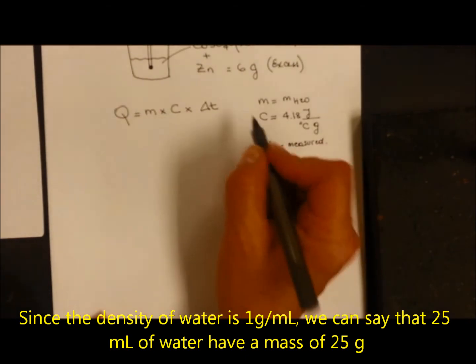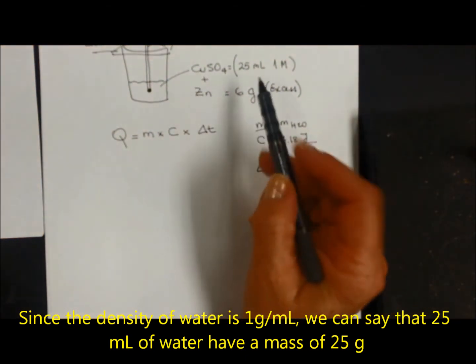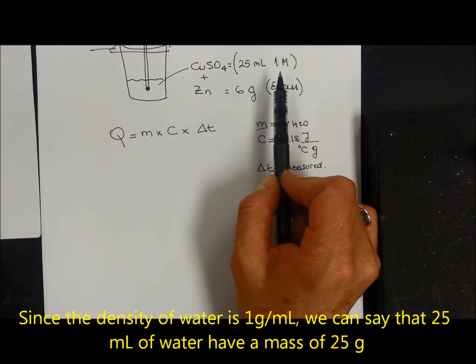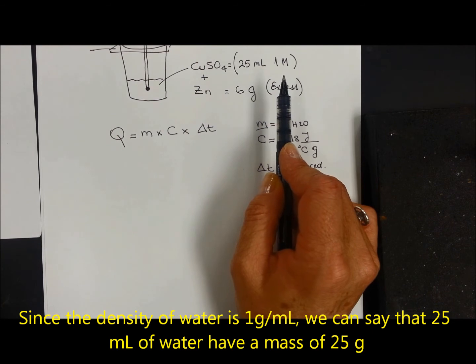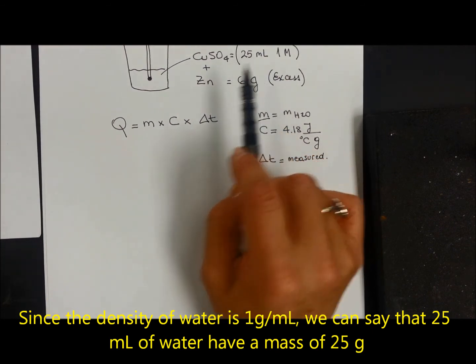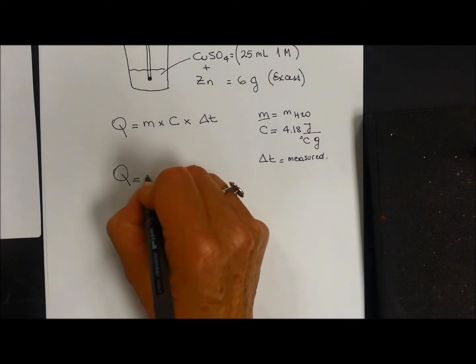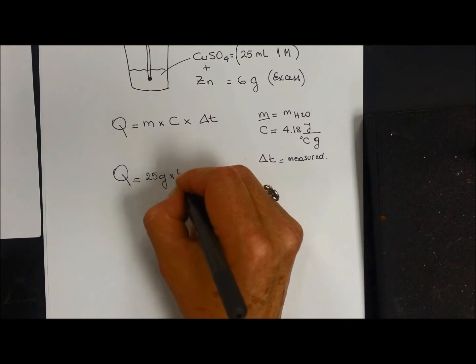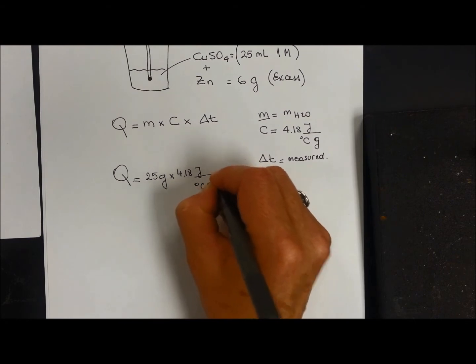We can say that the mass of water is going to be the mass containing the solution. For this particular example, we are going to take the volume of the solution to have an approximately one gram per milliliter density, so we are going to get the mass of the water as the same as the volume. So the Q is equal to the mass of the water, which is going to be 25 grams, times C, which is 4.18 joules over Celsius grams, times delta T.